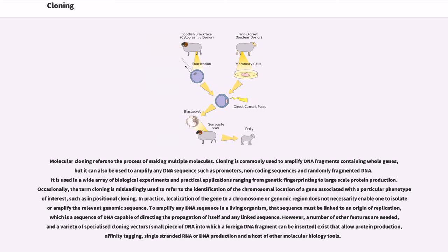Molecular cloning refers to the process of making multiple molecules. Cloning is commonly used to amplify DNA fragments containing whole genes, but it can also be used to amplify any DNA sequence such as promoters, non-coding sequences and randomly fragmented DNA. It is used in a wide array of biological experiments and practical applications ranging from genetic fingerprinting to large-scale protein production. Occasionally, the term cloning is misleadingly used to refer to the identification of the chromosomal location of a gene associated with a particular phenotype of interest, such as in positional cloning.